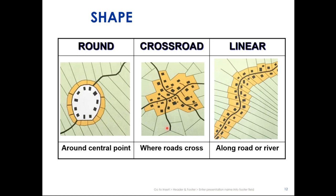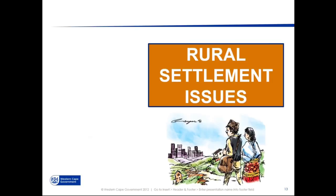Ladies and gentlemen, we are now going to move to rural settlement issues. This is very, very important. You can see on the diagram what is happening — this is a lot of our problems today: everybody wants to move from the rural to the urban area, and that movement is in many cases not so good because it's creating problems on both sides.